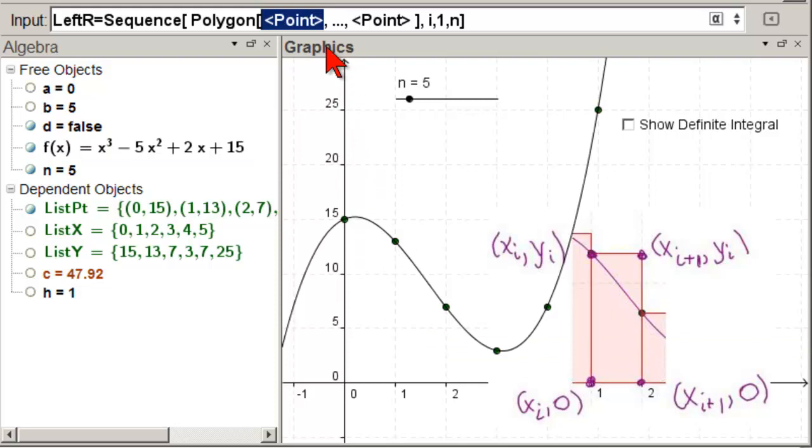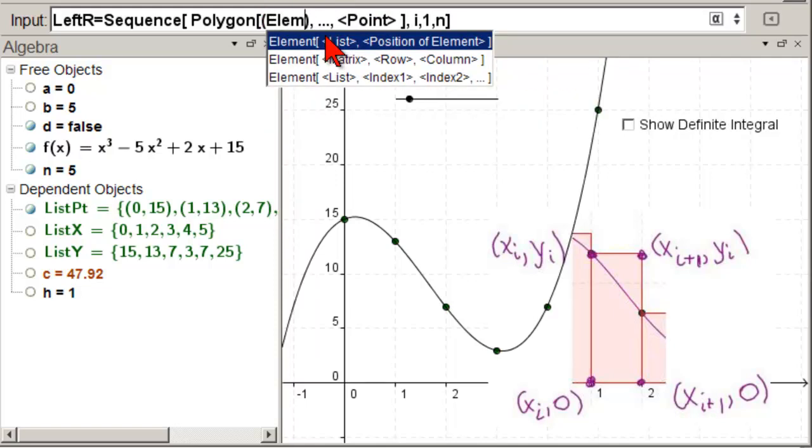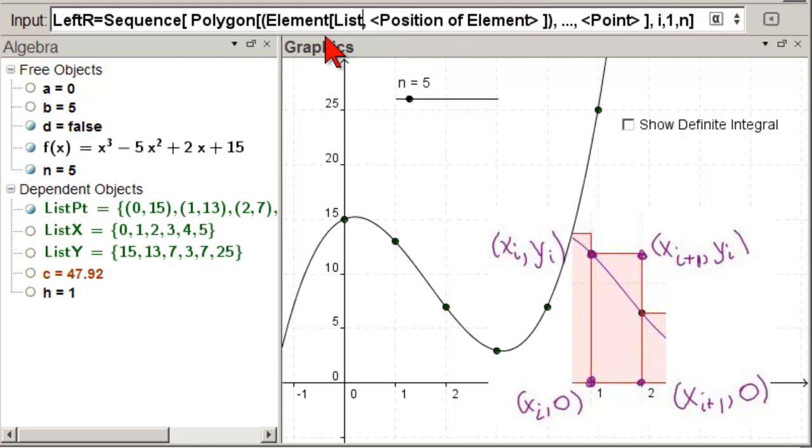So the first point is xi0. So we're going to need a point. And then we need to take the element from list x. Which element? The ith element. And now that's the first part of that point. What's the second part of that point? 0. So comma 0. There's our first point. And now we're going to copy that right there. And move over to the next point in the polygon. Paste it in. And then actually we don't want 0. We want yi. So we're just going to copy this part again here. And put it instead of the 0. And then what do we need to change there? We need to make it y.